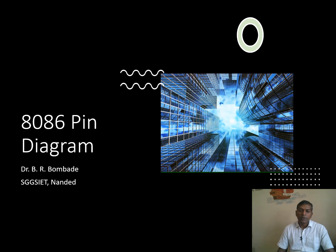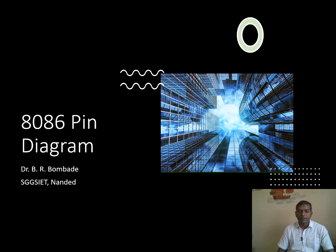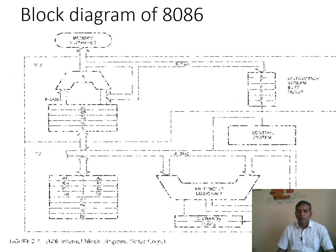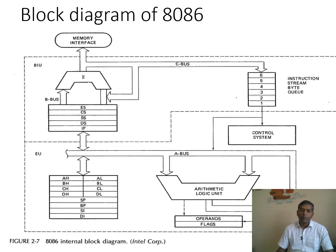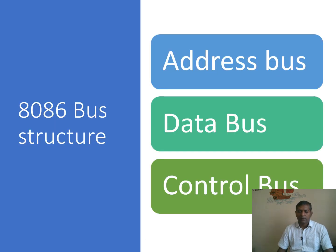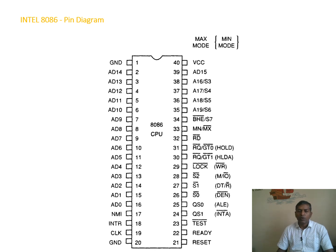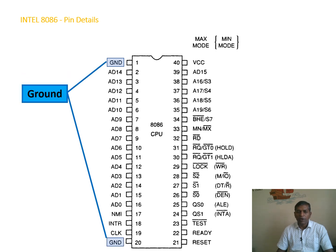Hello students, today we learn about the 8086 pin diagram. We have already gone through the behavioral architecture of 8086. This architecture has address bus, data bus, and control bus — all of which are included in the 8086 pin diagram. This is a 40-pin IC in which different pins are allocated for different purposes.